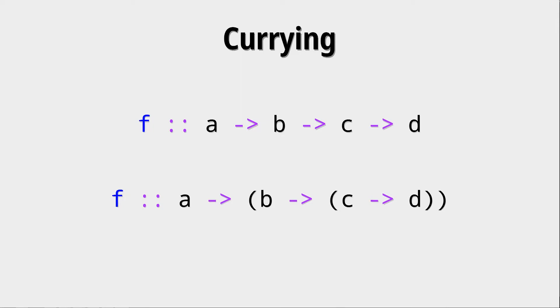So basically functions that have multiple arguments don't exist. Every function has only one argument and then returns maybe another function or an end result.